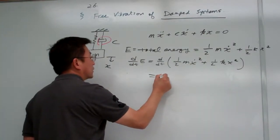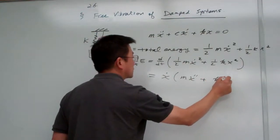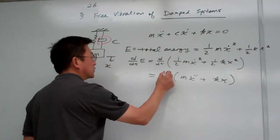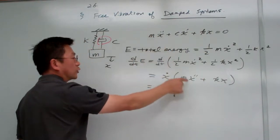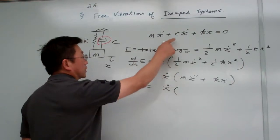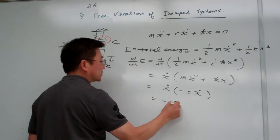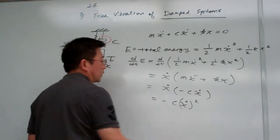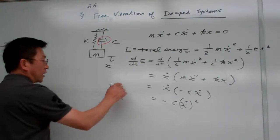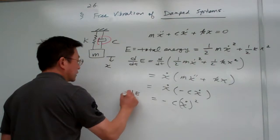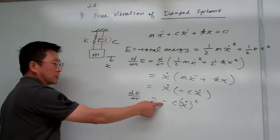This expression can be written as (m·x-double-dot + k·x) multiplied by x-dot. From the equation of motion, we know this term equals minus c·x-dot, so that gives us minus c·x-dot squared. So dE/dt equals minus c·x-dot squared.